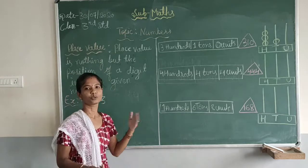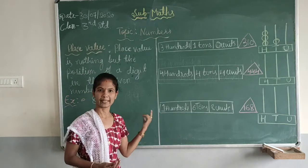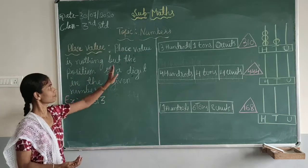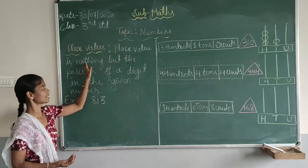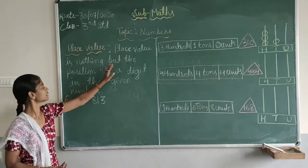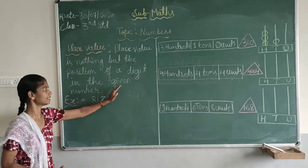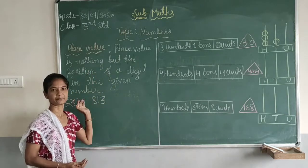Before that, we have to know the meaning of place value. What is that? Place value is nothing but the position of a digit in the given number.